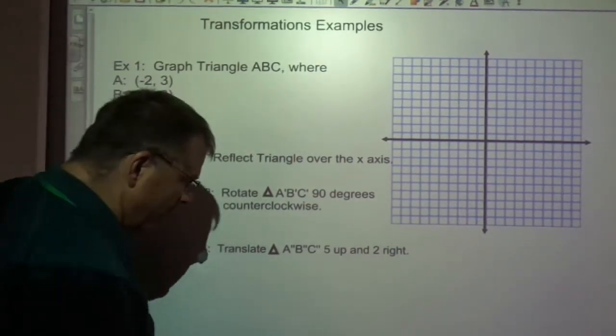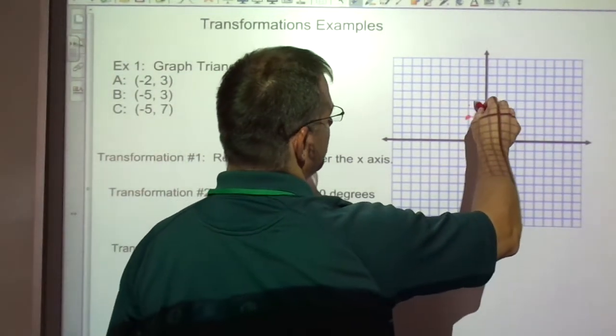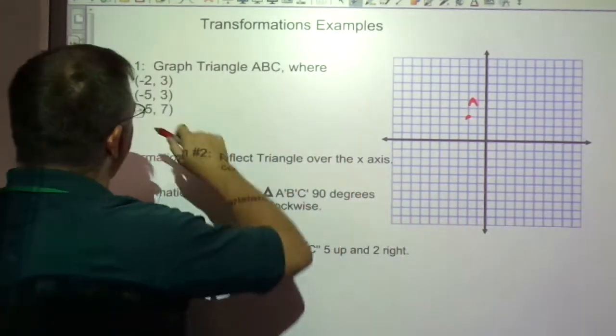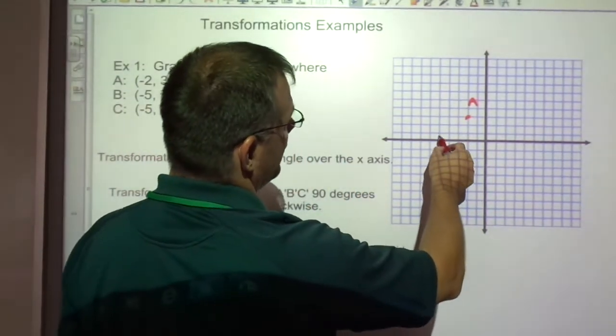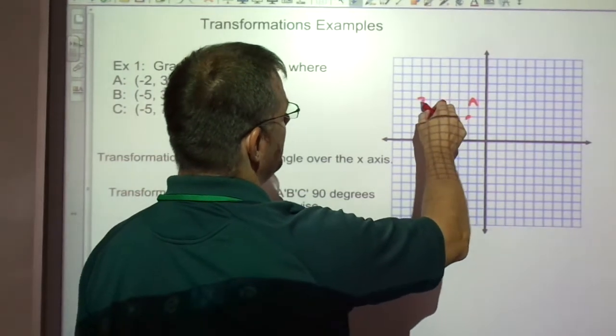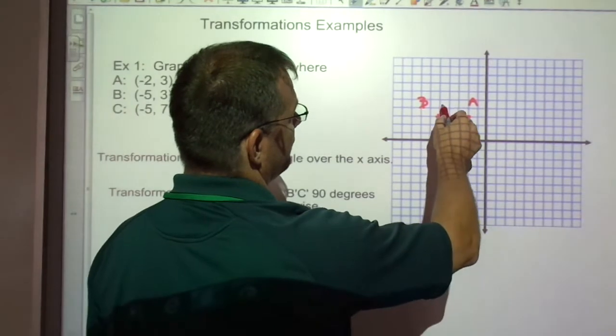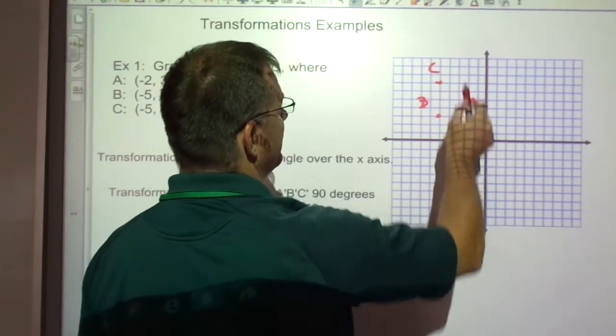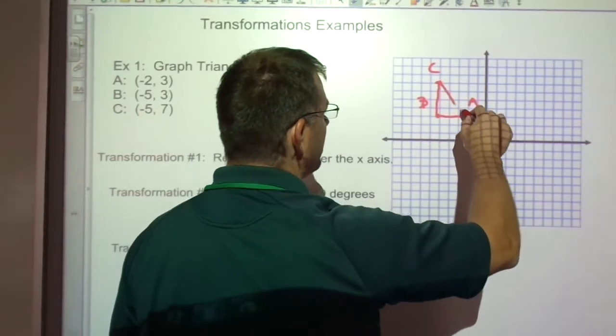So we'll start with triangle ABC, where we start at negative 2, 3. We'll call this point A. And then negative 5, 3, there's point B. And negative 5, 7, there's point C. So we've got this triangle here that we're starting with.